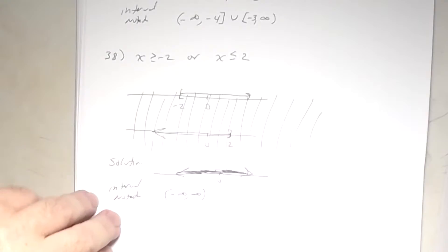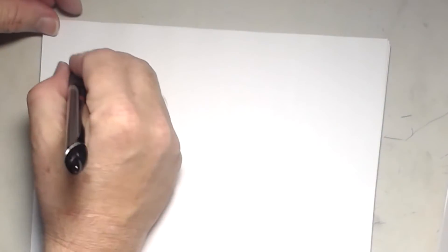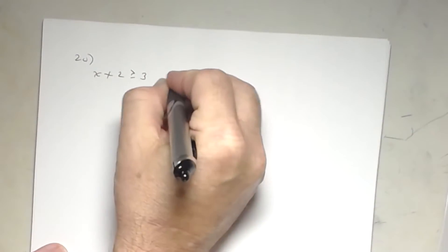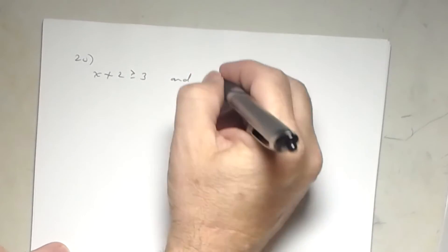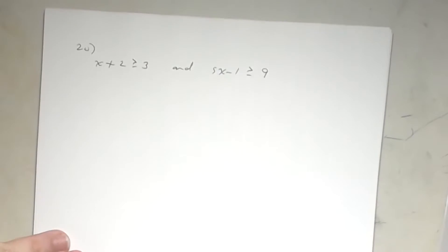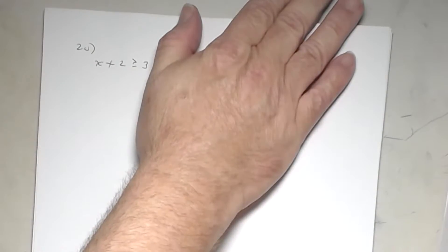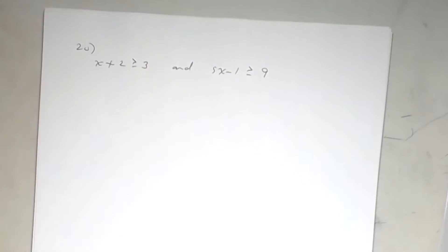Now let's look at number 20, where you have to solve first. You have x + 2 ≥ 3 AND 5x - 1 ≥ 9. On your test Tuesday you'll have inequalities to solve — subtract 2 to get x ≥ 1. Graph that: bracket at 1 going right.